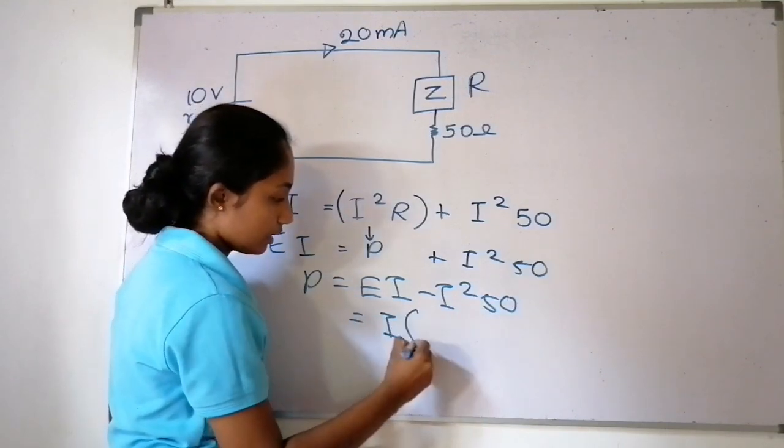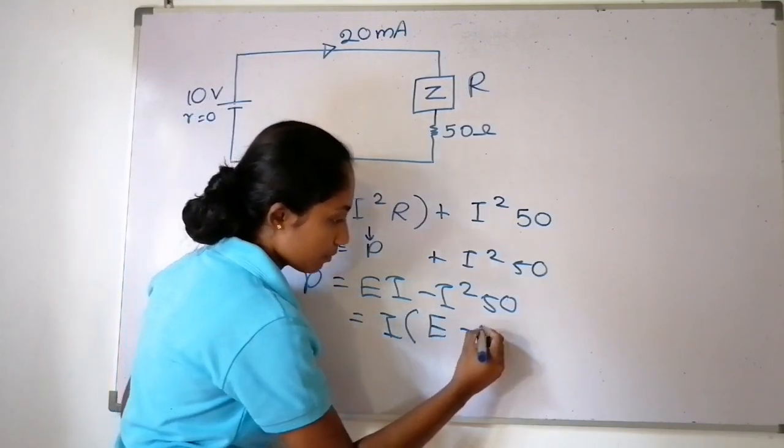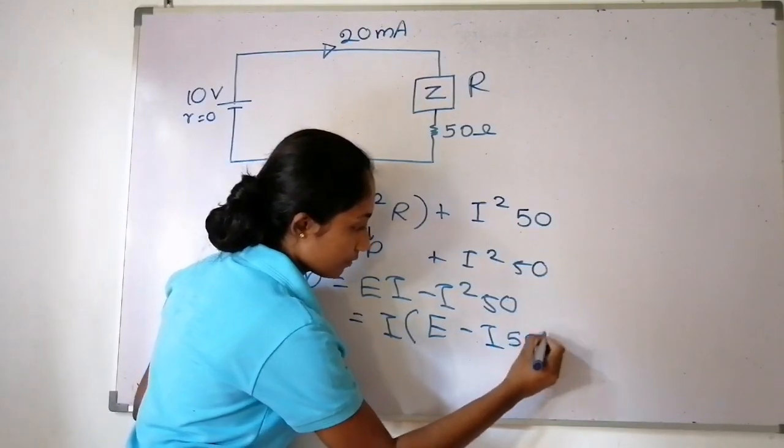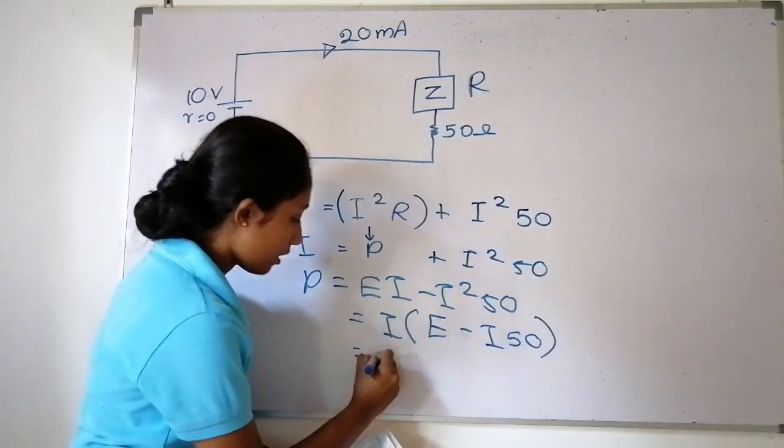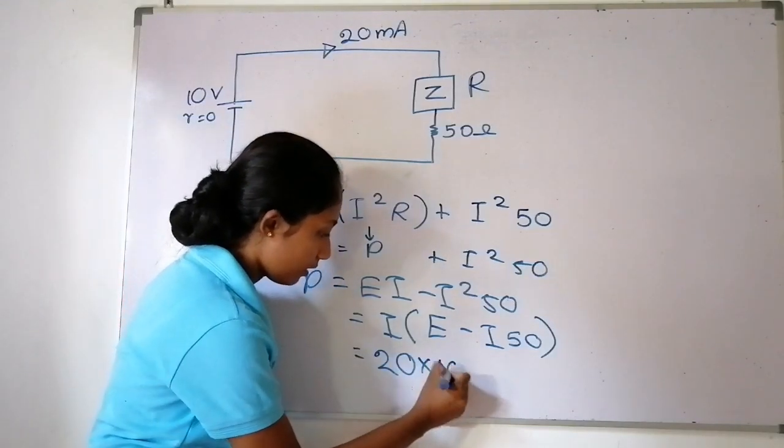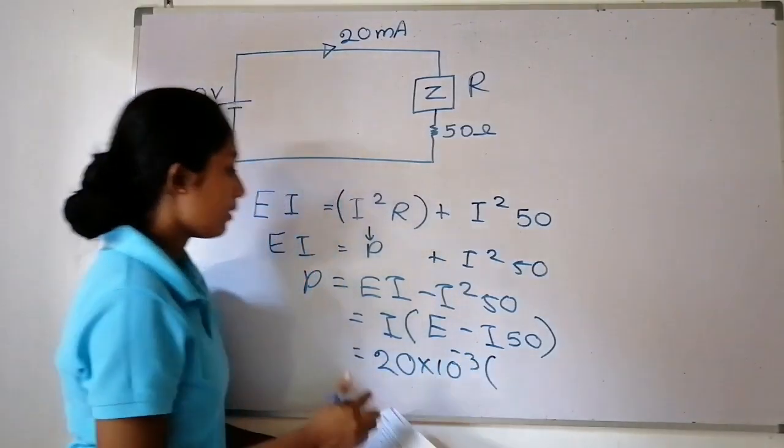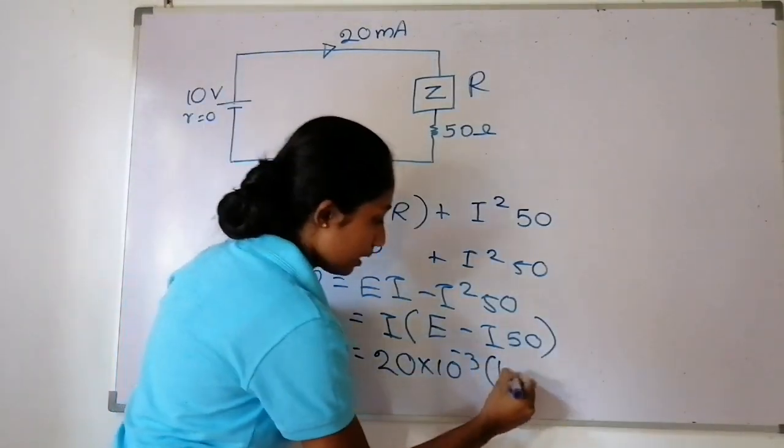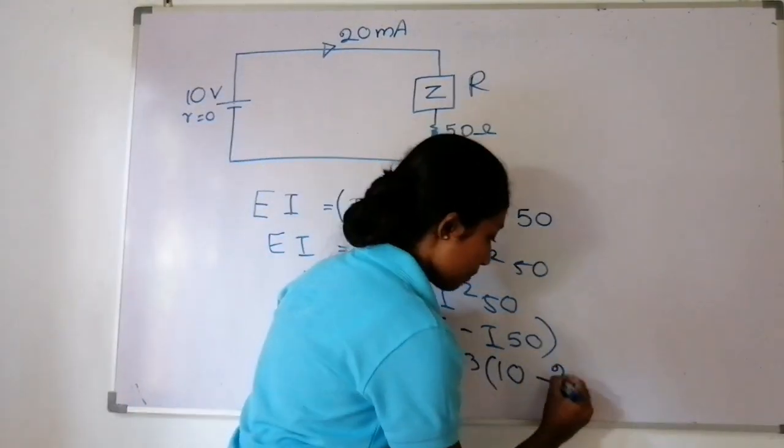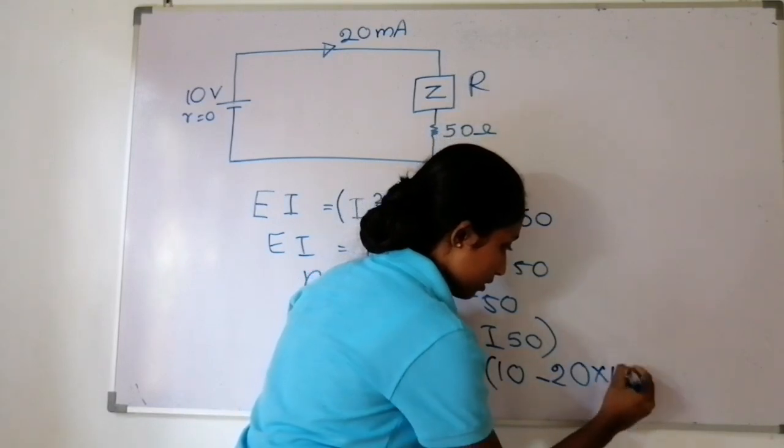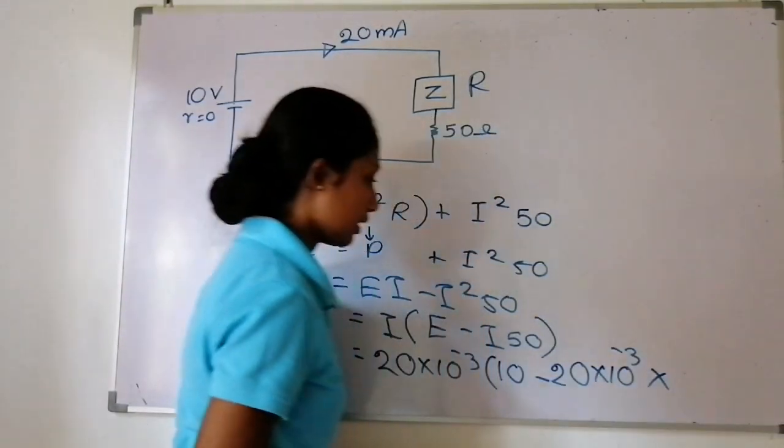We can substitute this current value into our equation. So 20 times 10 to the minus 3 equals 10 divided by R.